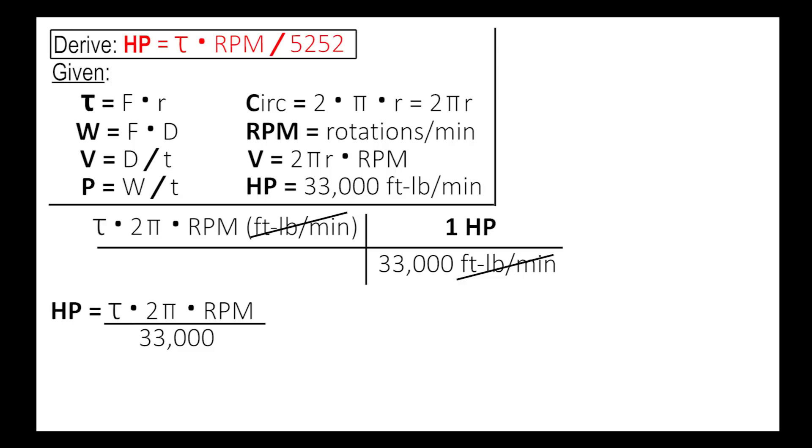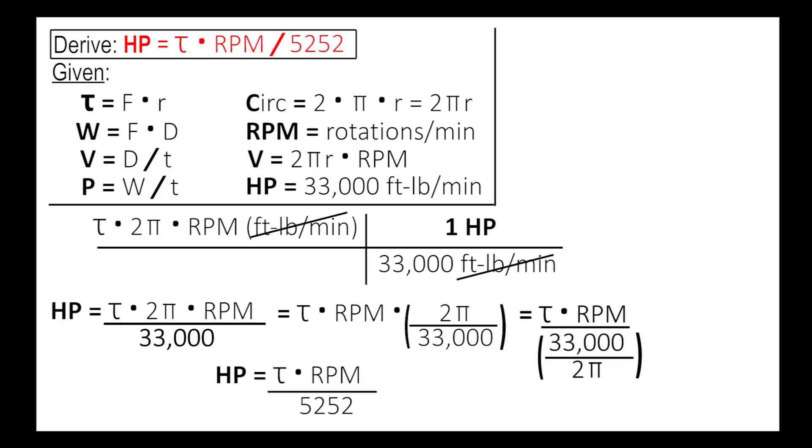Now rearranging just a little bit, we get torque times RPM times 2 pi over 33,000. Once again, putting that 2 pi on the bottom of the 33,000, we get torque times RPM over 33,000 divided by 2 pi. And that gets us our horsepower equals torque times RPM divided by 5252. So that's where that equation comes from.